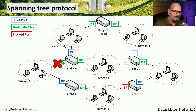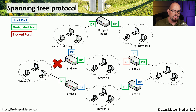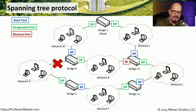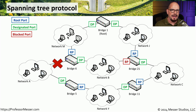Spanning Tree recognizes that this connection has failed because the hello was not seen within three updates, and Spanning Tree will now go into a mode to reconfigure the network. It first removes those blocked ports from those bridges, so now network A can communicate through network Y, network C, network J, through the root, and finally to network M. This is how Spanning Tree changes the network configuration in real time to allow communication without causing a loop.